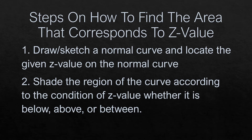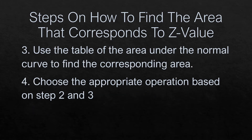There are some steps on how to find the area that corresponds to a Z value. First, draw or sketch a normal curve and locate the given Z value on the normal curve. Second, shade the region of the curve according to the condition of the Z value, whether it is below, above, or between. Third, use the table of the area under the normal curve to find the corresponding area. Fourth, choose the appropriate operation based on step 2 and step 3.